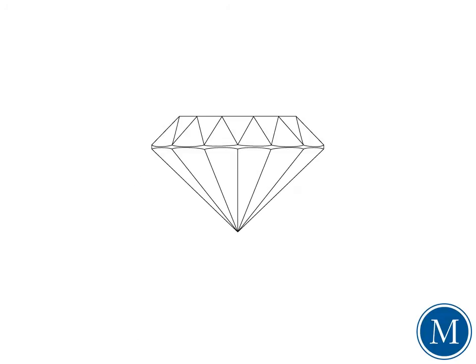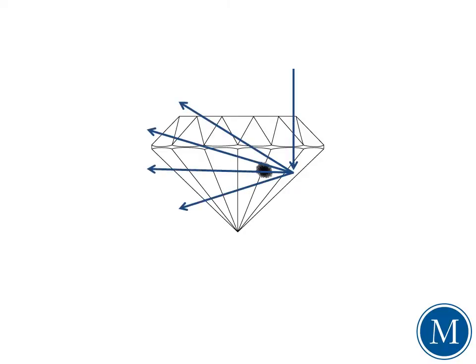But even though you may not be able to easily see an inclusion, it does interrupt the flow of light through a diamond. When light enters a diamond, it is immediately reflected out. If there is anything disrupting this flow, such as an inclusion, a portion of light will be lost. This diminishes the diamond's brilliance, and hence its value. Thus, diamonds with no or few flaws are highly valued and extremely rare.